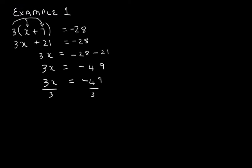And what do we need to do? We now need to solve for x. So we divide by the number in front of the x on both sides. 3x divided by 3 is x, and 49 divided by 3 is 16 and a third. That leaves us with an answer of negative 16 and a third.